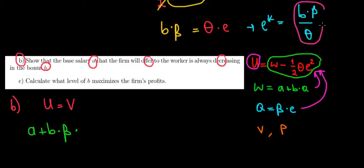The effort level is B times beta divided by theta. So we're gonna write it over here: B times beta divided by theta. Let me just highlight that this is the effort level so we know what we're doing.